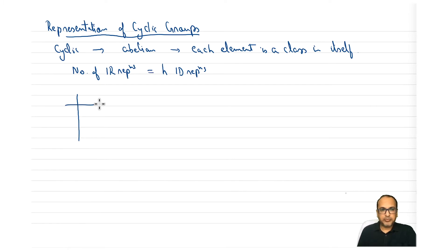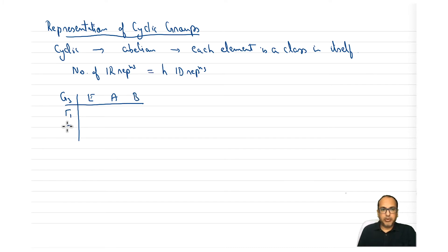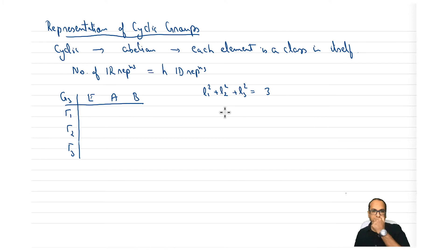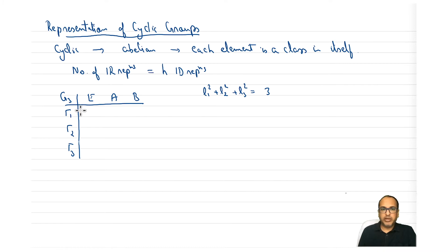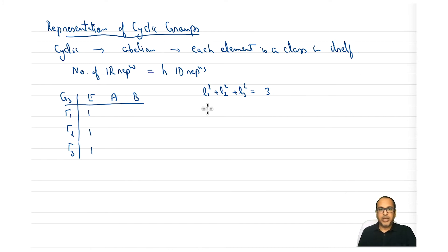Let's take a general cyclic group G3 with elements E, a, and b. Because there are three classes, we should have three IR representations. If there are three IRs, then l1² + l2² + l3² = 3, and the only solution with positive values for these dimensions is 1, 1, 1. So we write 1, 1, 1 under symmetry operation E.